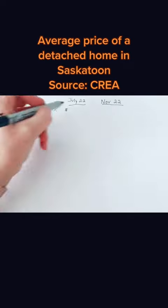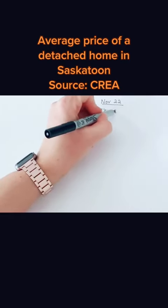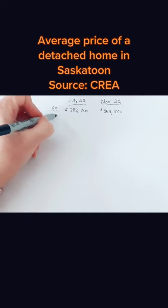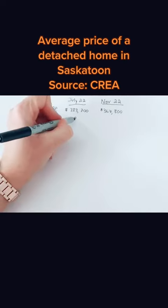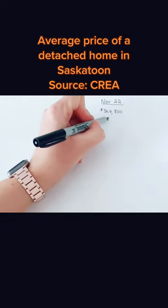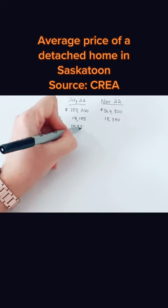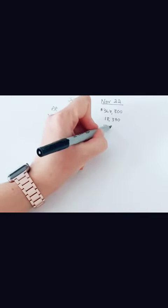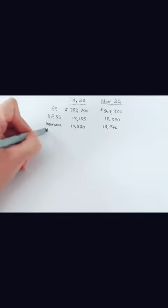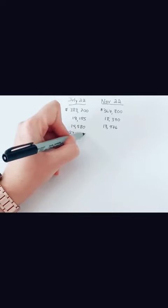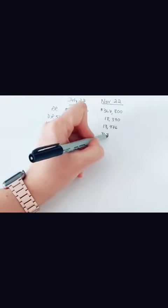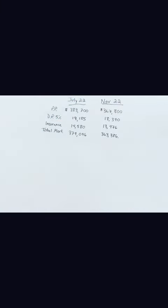Purchase price: $383,700 versus $367,800. 5% down payment: $19,185 versus $18,390. Mortgage insurance: $14,580 versus $13,796, for a total mortgage of $379,095 and $363,386.